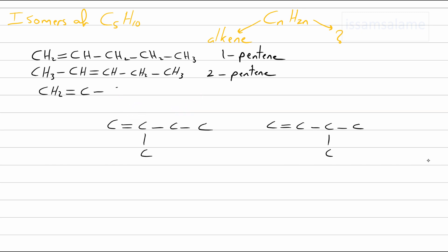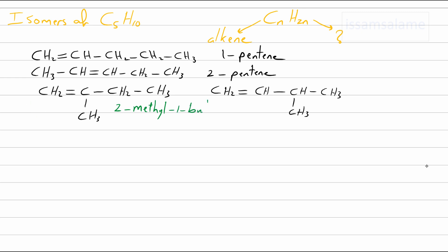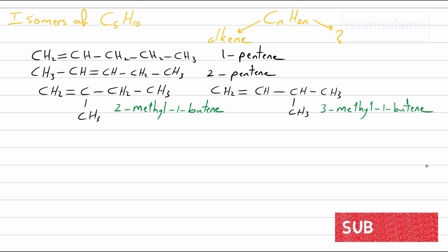Let me draw them properly with the edges. The first structure is 2-methyl-1-butene and the second one is 3-methyl-1-butene. As I mentioned, you will find many useful links in the description that would help you with naming organic compounds.